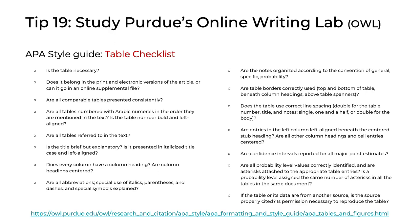Tip 19 is related to APA style. We really want to encourage you to study Purdue's Online Writing Lab, or the OWL. One of the useful things they have on that website is an APA-aligned table checklist. This checklist asks a number of questions that you can use to ensure that your tables are, A, necessary, and B, formatted correctly.